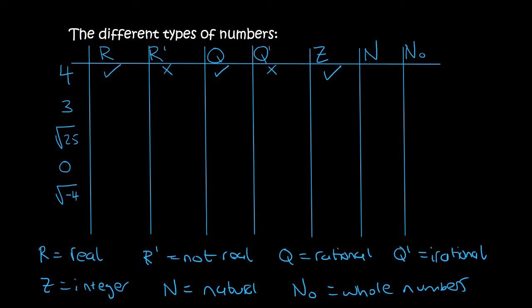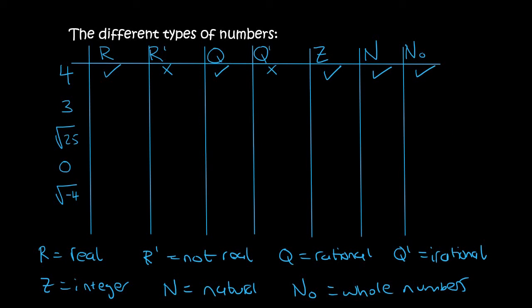Natural numbers — if I asked you to start counting you would start by saying 1, 2, 3, 4. So 4 is a natural number. It's also a whole number. Whole numbers start at 0: 0, 1, 2, 3, 4. The number 3 is obviously going to be the same as the number 4 in terms of classification — there's no major difference between them.